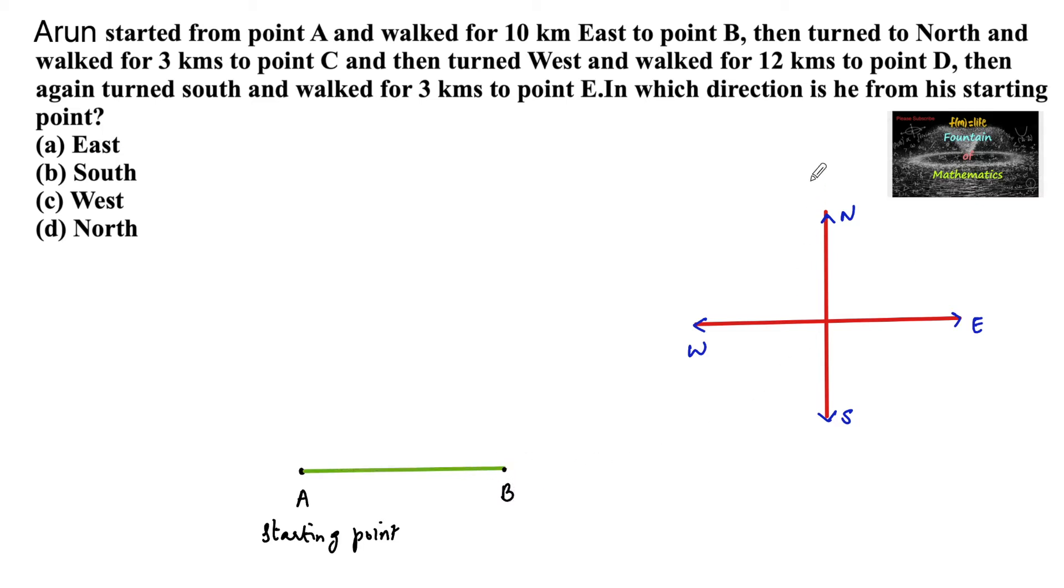Then turned to north. So in east direction and again north direction means he is taking left side, left direction. So towards the left, he turned to north and walked for 3 km. So here 10 km and here 3 km, and the position is C.